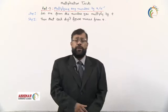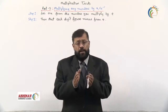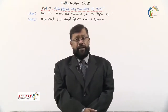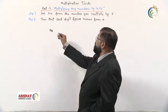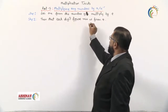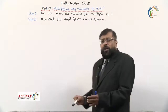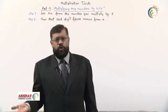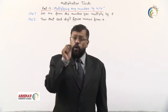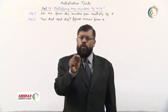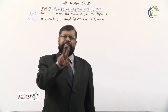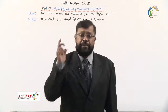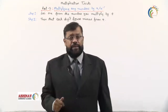In the last session we covered the fourth part on multiplication tricks. In this session we shall start with the fifth part. We are going to learn how to multiply any number by 9, 99, 999, and so on — and find the answer without using a calculator.